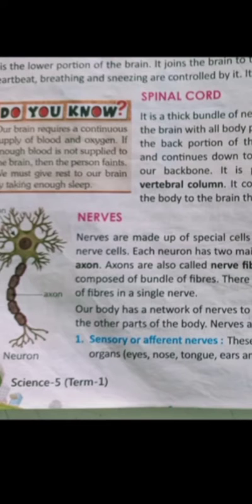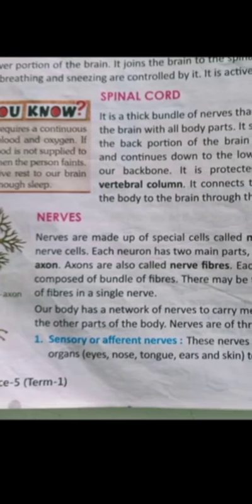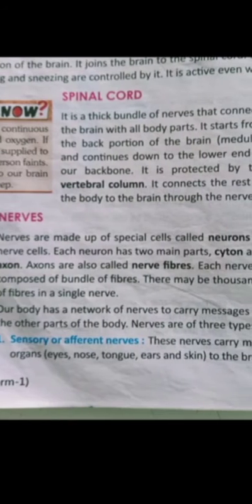Our body has a network of nerves to carry messages between the brain and other parts of the body. There are three types of nerves.